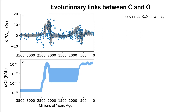When we look at the delta-13C curve, we can see that for most of Earth's history, delta-13C has a baseline of around zero per mil. So whenever delta-13C deviates from zero, we call it a carbon isotope excursion.